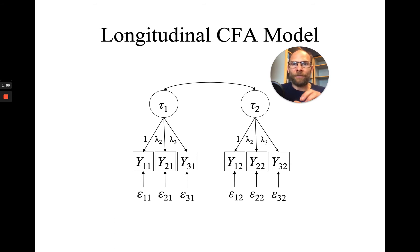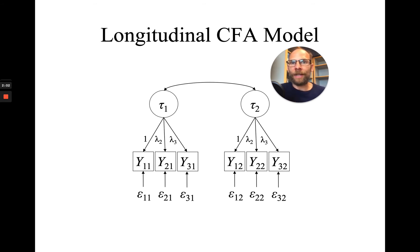If the indicators are differentially related across time — meaning if some indicators correlate more highly with themselves, let's say maybe 0.7, than they correlate with the other indicators, let's say 0.6 — then this model does not account for those differences in the covariances or correlations across time.